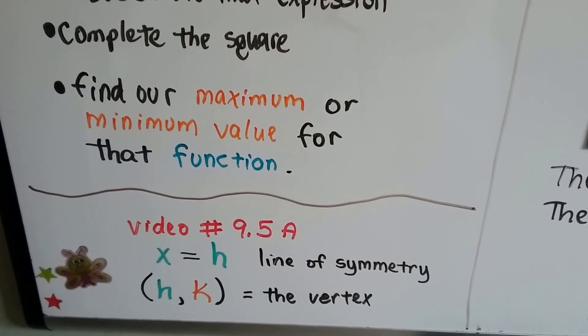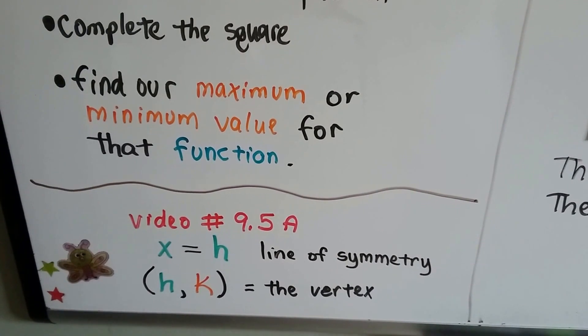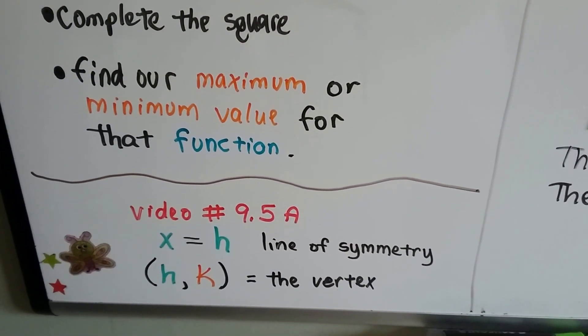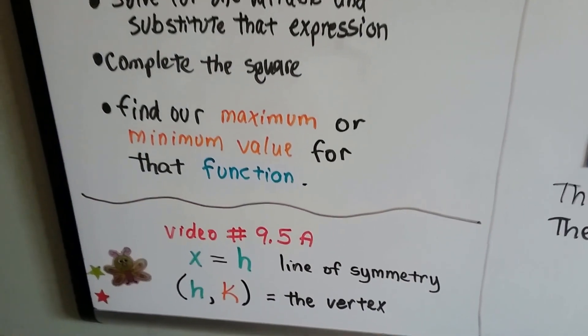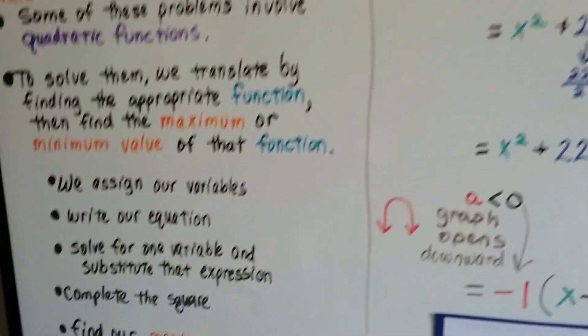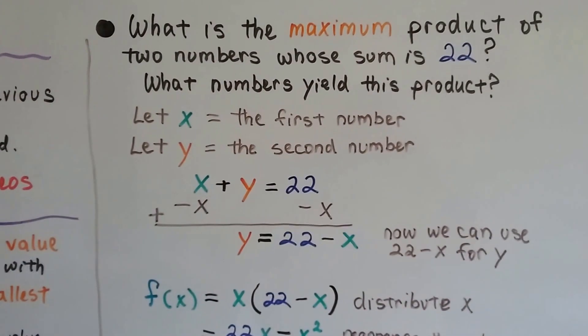In 9.5a, we talked about how x equals h, that's our line of symmetry, and the point (h,k) is our vertex. That vertex is going to be our maximum or minimum value, depending on if the parabola opens up or down.